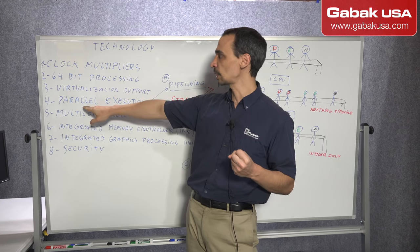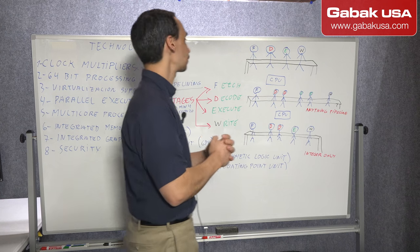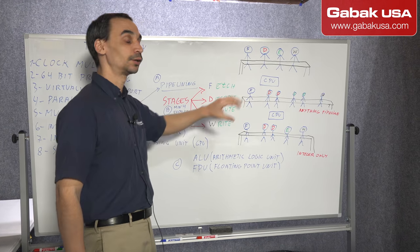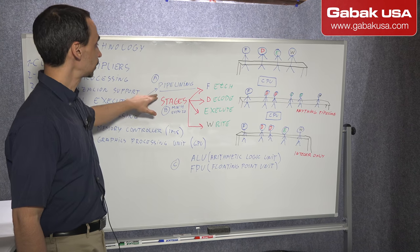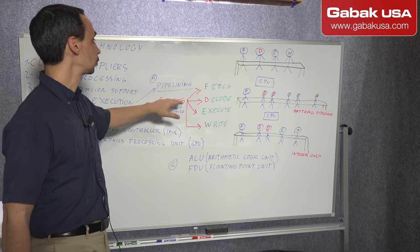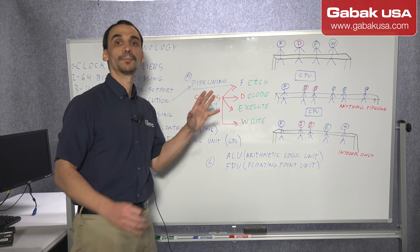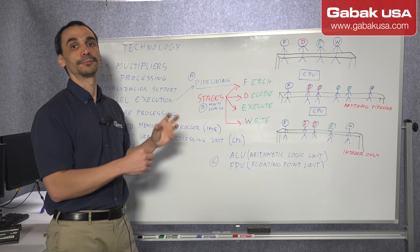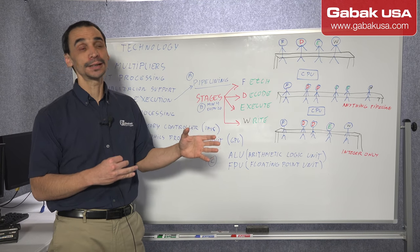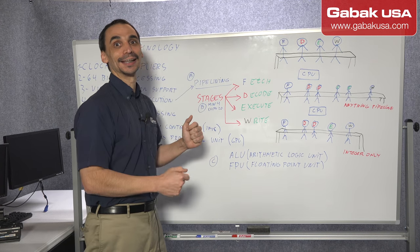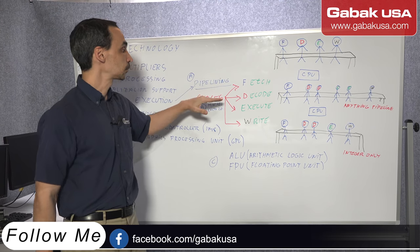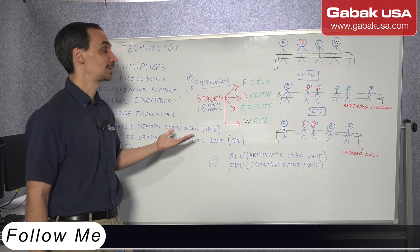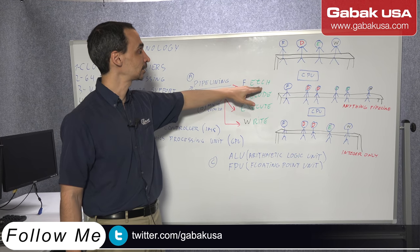In this class we are going to talk about parallel execution, and we have a few things that I wrote here on the whiteboard. The first thing is pipelining. Pipelining is when the CPU grabs the data from the data bus and delivers it again to the data bus. In order to do that it has four stages at minimum. It could be 20 stages as well. In this case we have four.